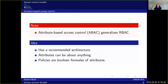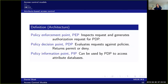Attribute-based access control has a recommended architecture for the reference monitor. The architecture has a policy enforcement point, which inspects requests and generates authorization requests for the policy decision point. The policy decision point evaluates against the policies to see if the request should be allowed or not, and it returns permit or deny. Then the policy enforcement point enforces this decision. There is also a policy information point, which can be used by the policy decision point to access attribute databases and all the information needed to make a decision for the request.